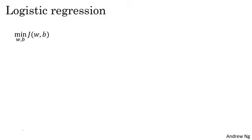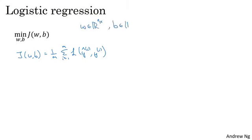Let's develop these ideas using logistic regression. Recall that for logistic regression, you try to minimize the cost function J, which is defined as the sum over your training examples of the losses of the individual predictions on the different examples. Where w and b in logistic regression are the parameters, w is an nx-dimensional parameter vector and b is a real number.